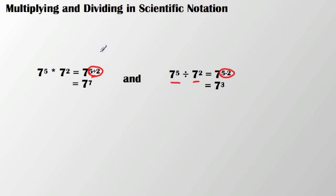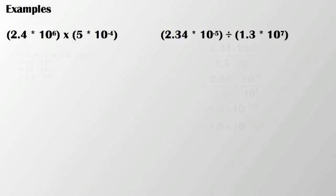This relates when multiplying and dividing in scientific notation. Let's take a look at our first example. We have 2.4 times 10 to the sixth times 5 times 10 to the negative fourth. So if we're going to work out this solution,